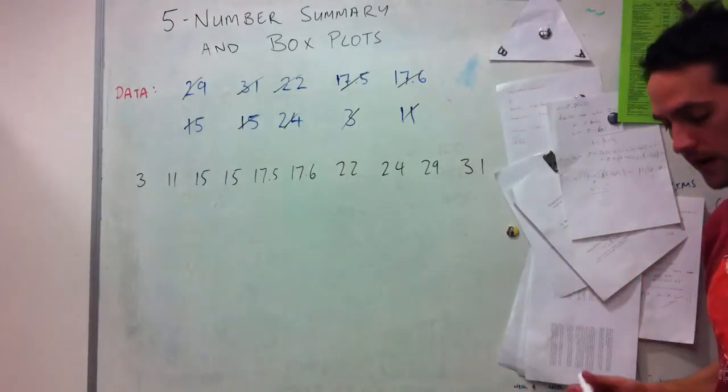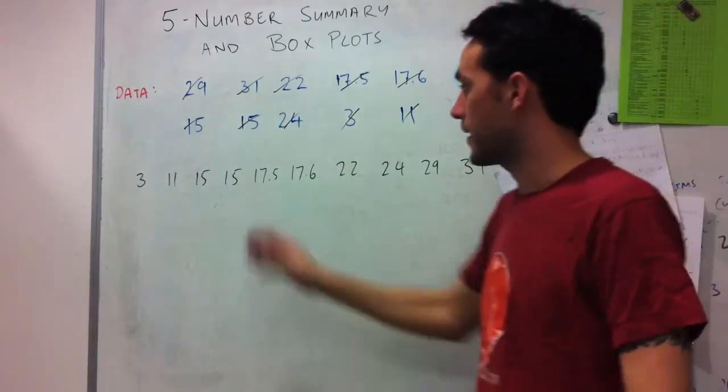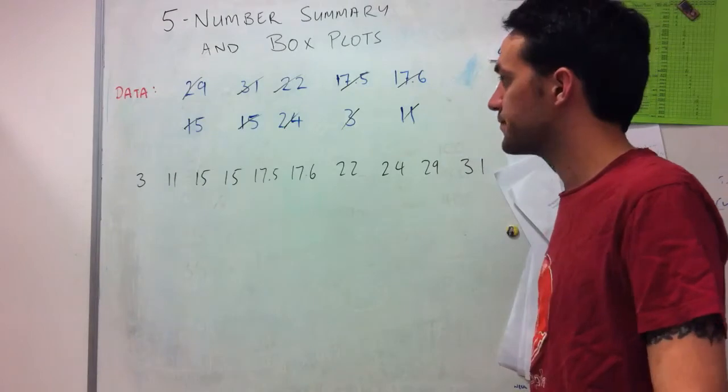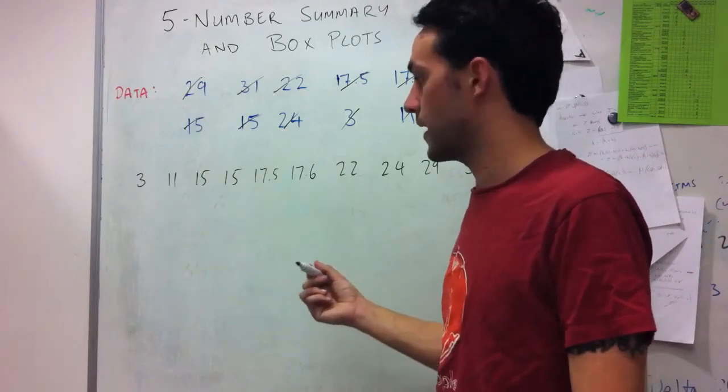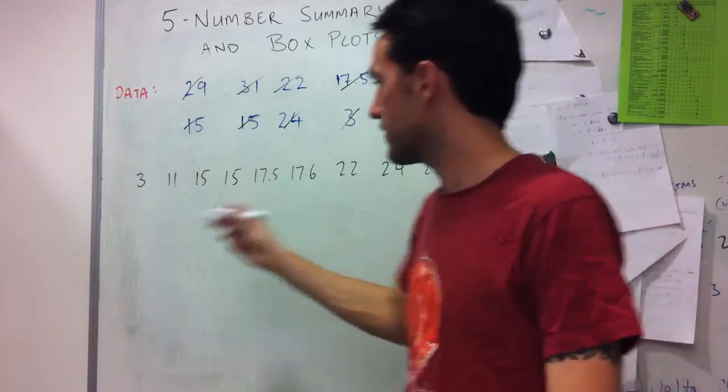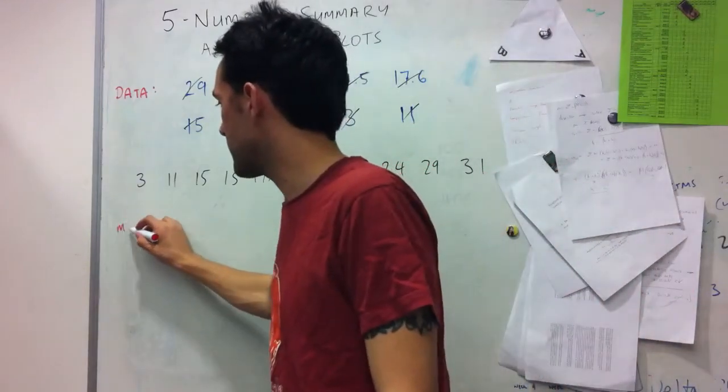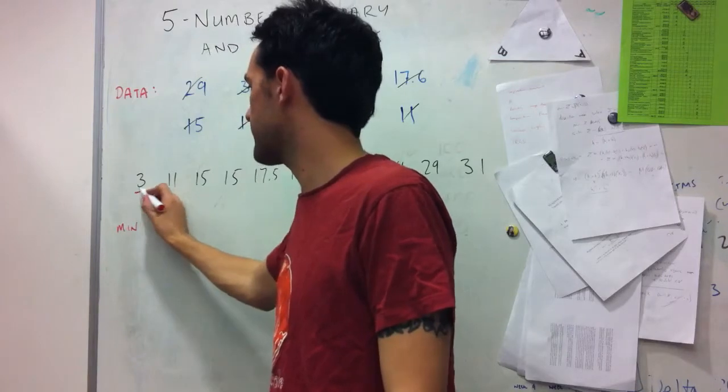So that's my 10 data arranged from lowest to highest. And so from this, I have a few of my numbers in the five-number summary. So the five-number summary is the minimum, which in this case is 3.